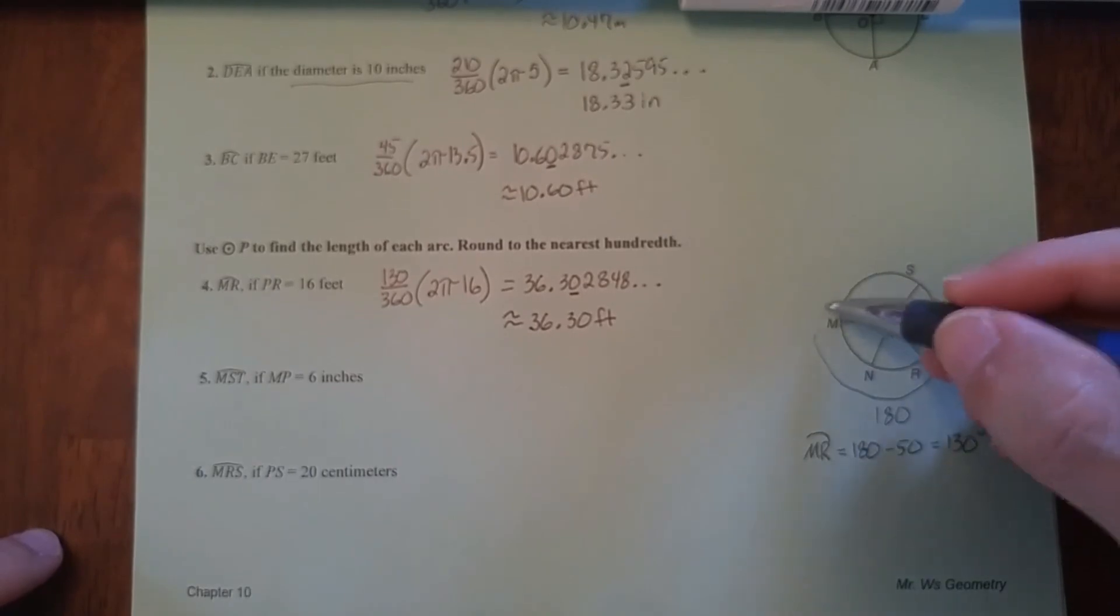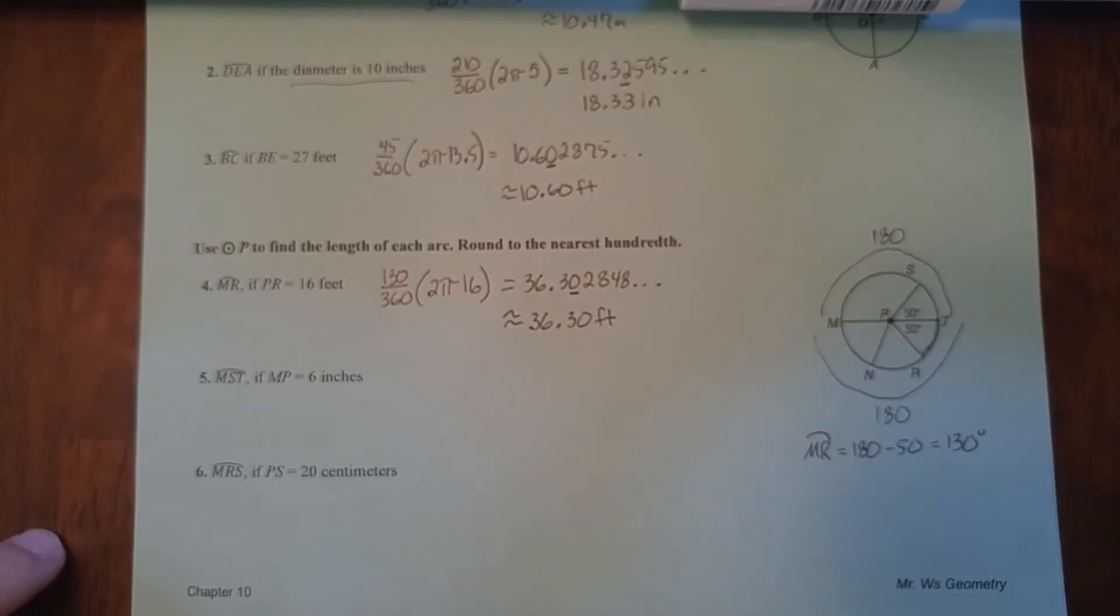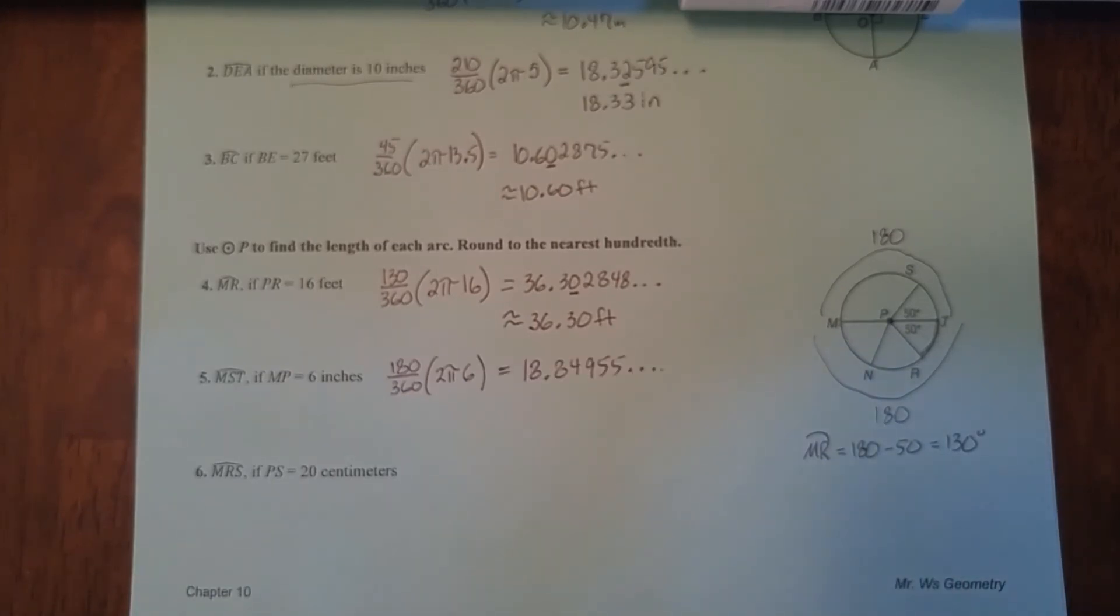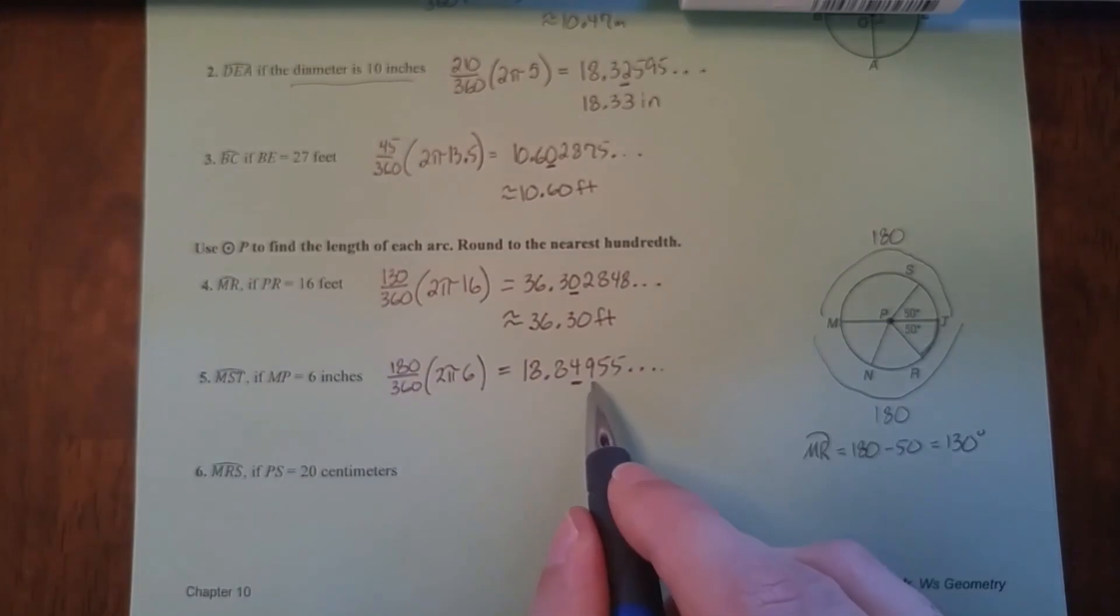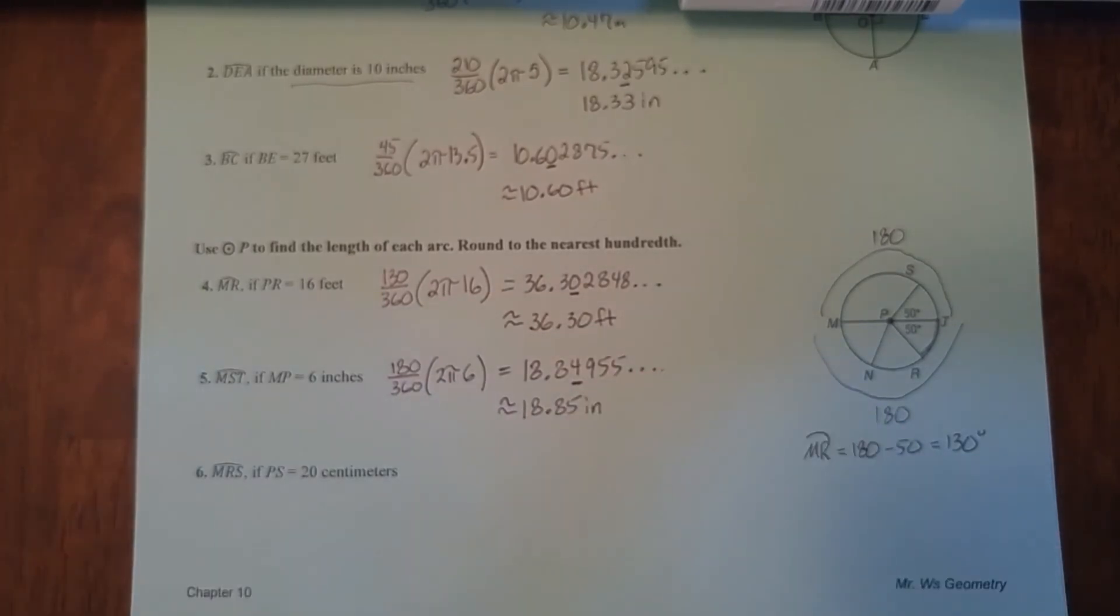The next problem, we have arc MST. MST, just like in the previous problem, when it goes from end to end of a diameter, we know this is a semicircle. So MST is going to be 180. So we're given MP, and MP is a radius, so we can plug that in directly. We get this when we plug into the calculator. Rounding, we underline the hundredth place. Look to the right. Since that's five or more, we add one to this. And don't forget your units.